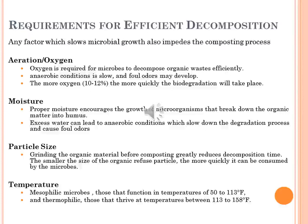Moisture: adequate moisture is essential for microbial activity. A dry compost will not decompose efficiently. Proper moisture encourages the growth of microorganisms that break down organic matter into humus. Avoid overwatering — excess water can lead to anaerobic conditions, which slow down the degradation process. Particle size: grinding organic material before composting greatly reduces decomposition time. The smaller the size of the organic refuse particle, the more quickly it can be consumed by microbes. A shredder is useful for chipping or shredding landscape materials and is essential if brush or sticks are to be composted.